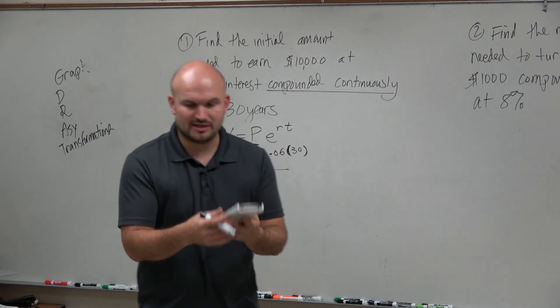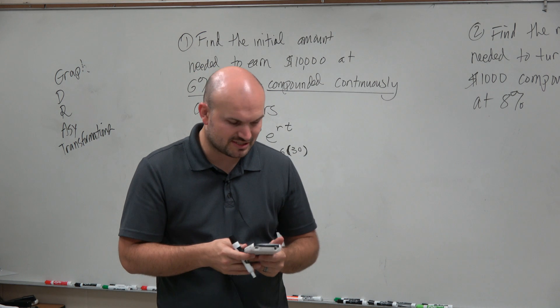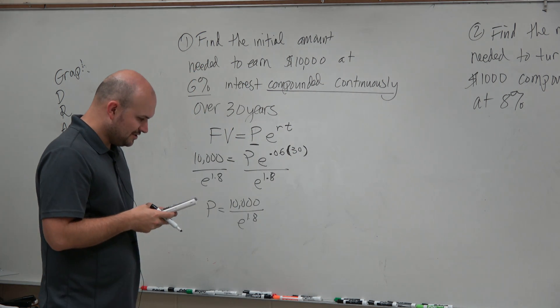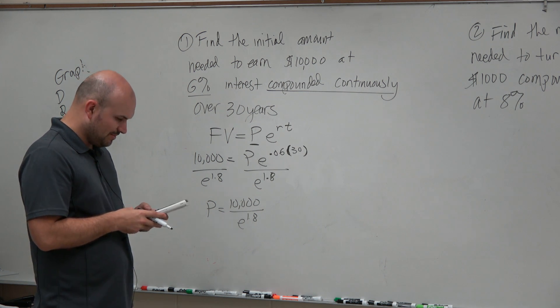If you're using a TI calculator or another calculator, you usually have to tilt your phone to the side. On a TI calculator, you could do 10,000 divided by second LN, which would be your E to the 1.8.